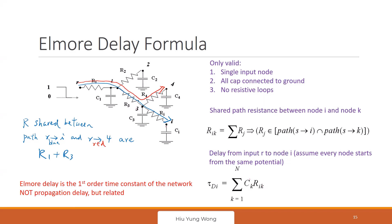Sum up all of those RC products and you get the delay constant — the time constant. Then multiply by 0.69 to get the propagation delay. Remember, this is just an approximation. Let me be precise: this gives you the time constant τ, not directly the propagation delay. Propagation delay = 0.69 × τ.